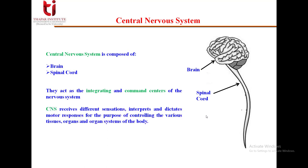The central nervous system, which is generally abbreviated as CNS, receives different sensations, interprets them, and dictates motor responses for the purpose of controlling the various tissues, organs, and organ systems of the body.